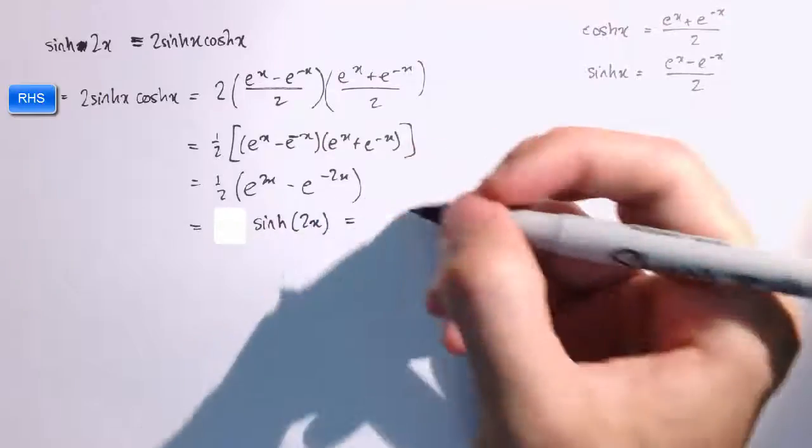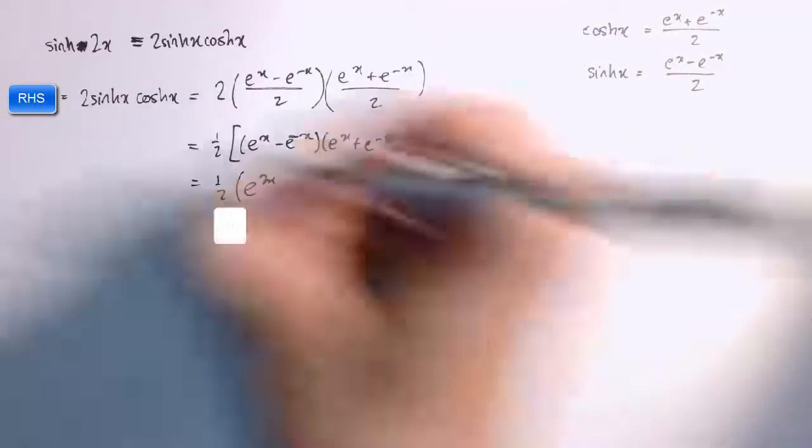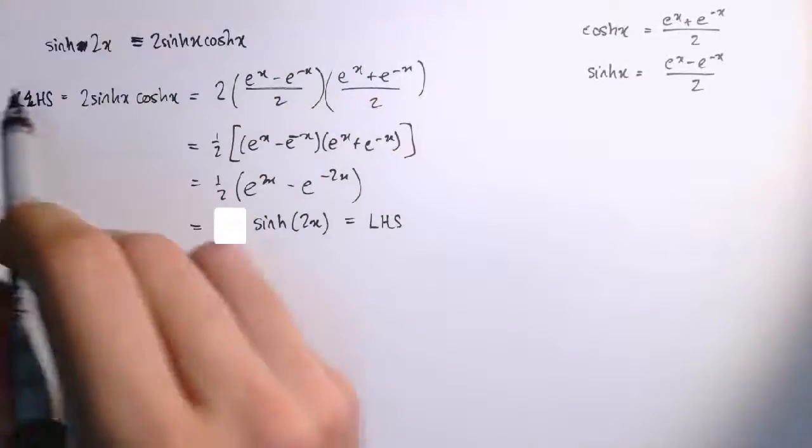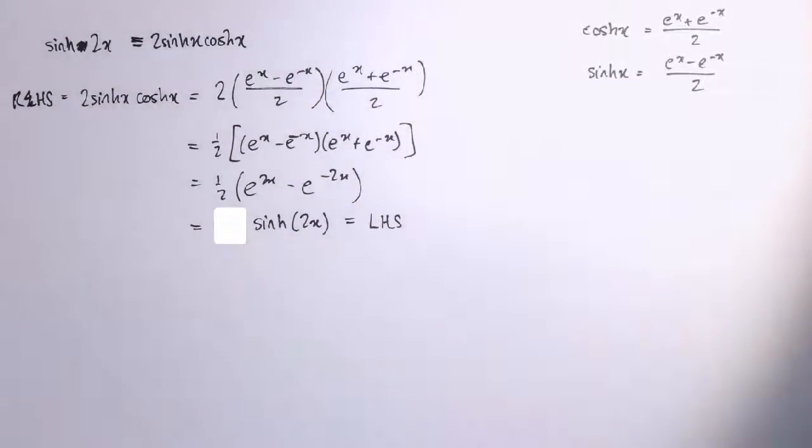Sorry, I've realized at the start here, I wrote left-hand side where I mean right-hand side. I've started with the right-hand side and worked it into the left-hand side, so I've proven that that is an identity.